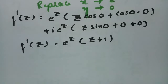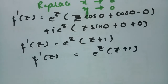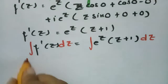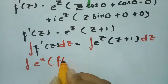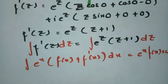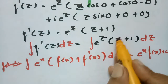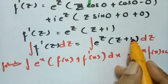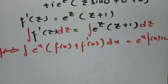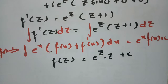Now integrating both sides: f(z) = ∫eᶻ(z + 1)dz. Using the formula ∫eˣ[f(x) + f'(x)]dx = eˣ·f(x) + C, where f(z) = z and f'(z) = 1, the integration and derivative cancel, giving f(z) = z·eᶻ + C.